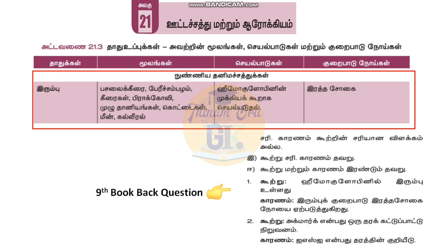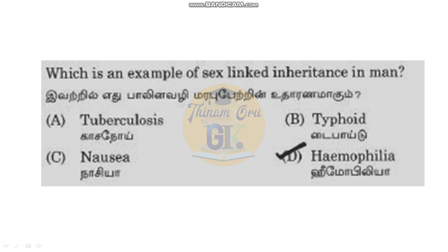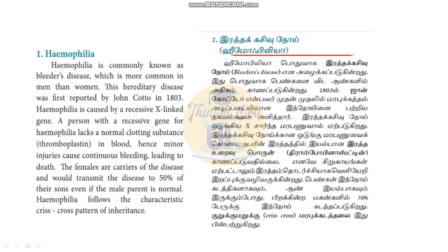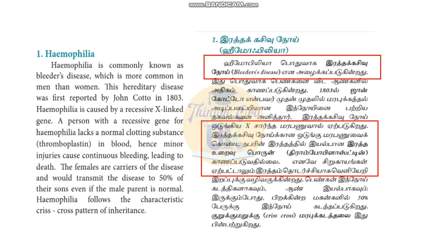From the 9th book-back questions, this covers sex-linked inheritance involving X chromosomes and Y chromosomes. The question involves hemophilia. Hemophilia is a sex-linked (X-linked recessive) bleeding disorder. The correct option is hemophilia. It is caused by a recessive X-linked gene.